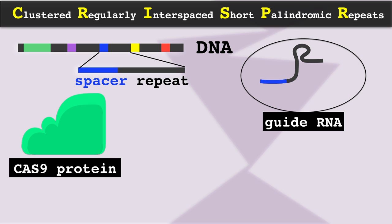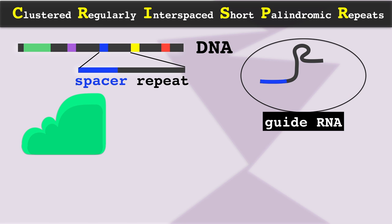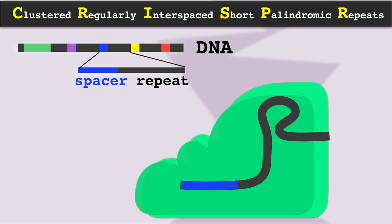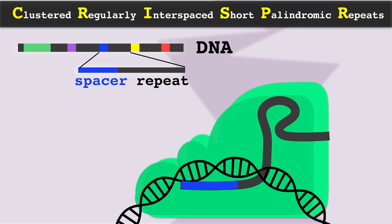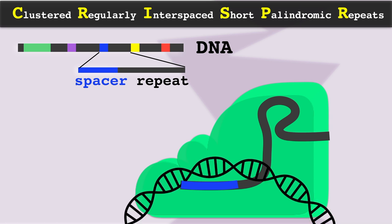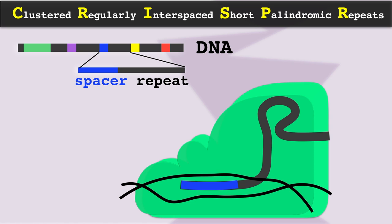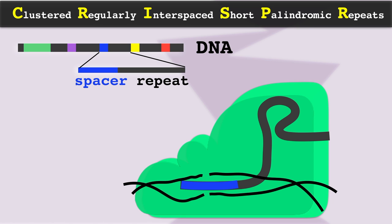The CRISPR-associated protein Cas9, whose gene is adjacent to the CRISPR locus, associates with the guide RNA, which guides it to the target site of the viral genome that is complementary to the guide RNA sequence, separating the strands. Then both strands of the viral genome are cut with the help of the enzyme activity of the Cas9 protein, and this typically disables the virus.